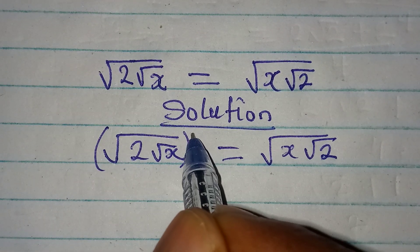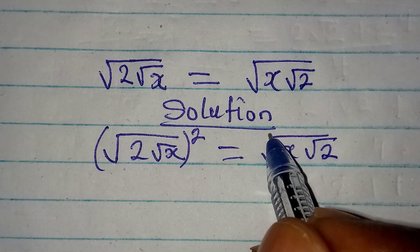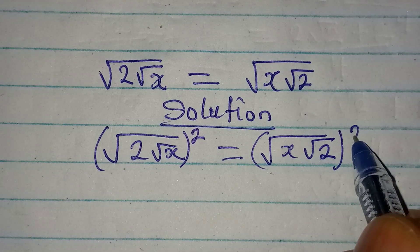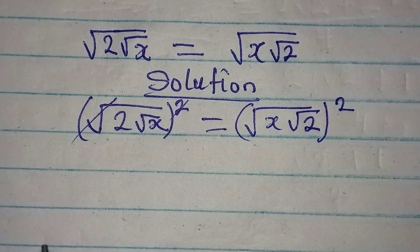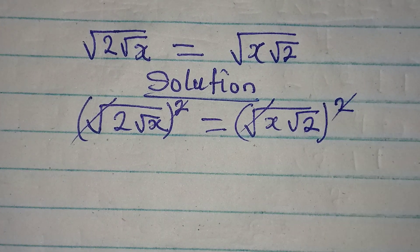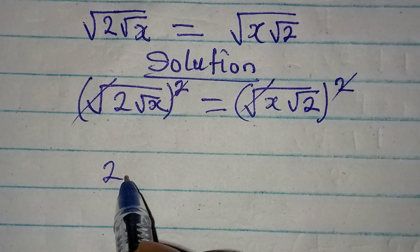Remove the square from here by squaring it, and what you do on one side you must do on the other side. So this and this will go, and this and this will go. Now we have 2 root x to be equal to x root 2.